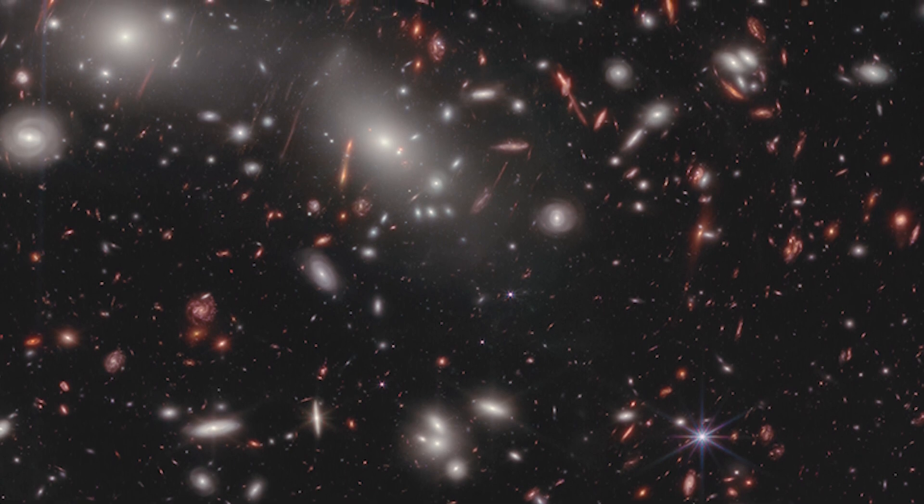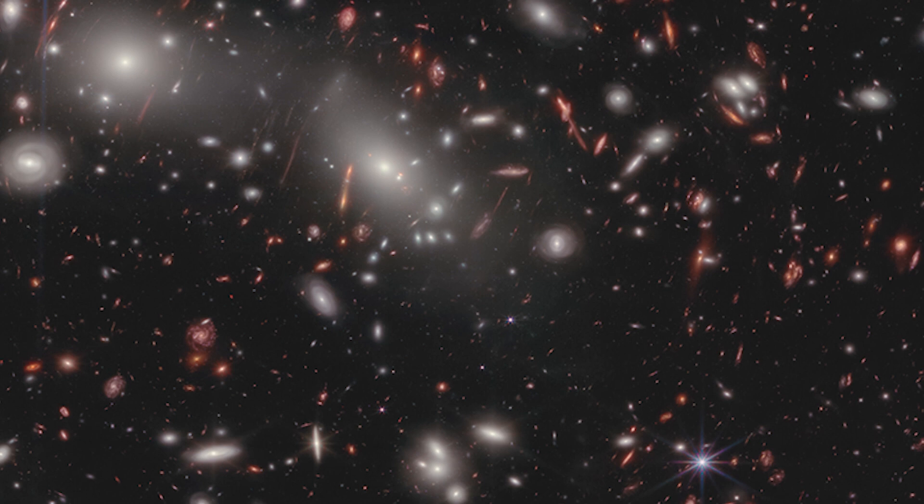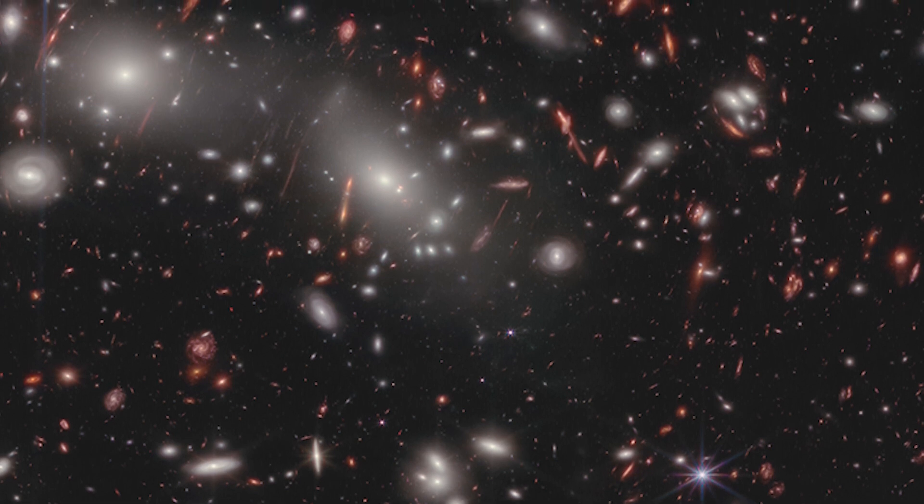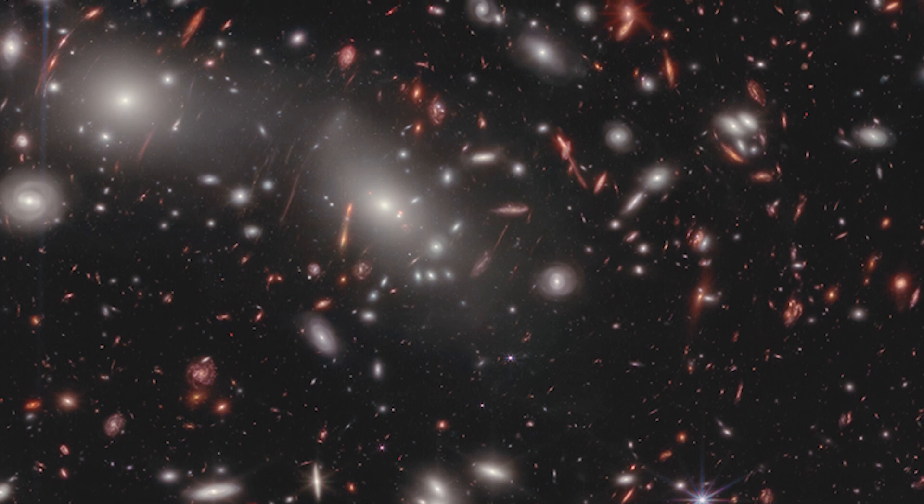The distortion caused by gravitational lensing allows astronomers to determine which galaxies are in the foreground and which are in the background, providing new insights into the structure and evolution of this megacluster.